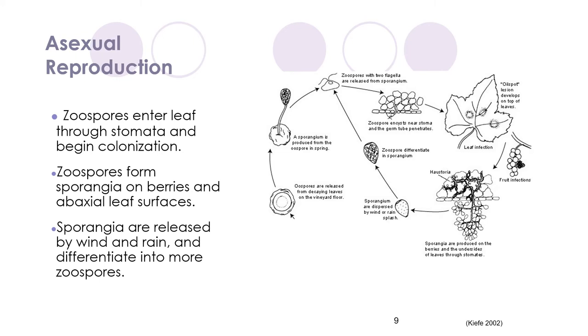When fall arrives, a sporangia produces a fertilized oospore, which is able to remain in stasis for overwintering.